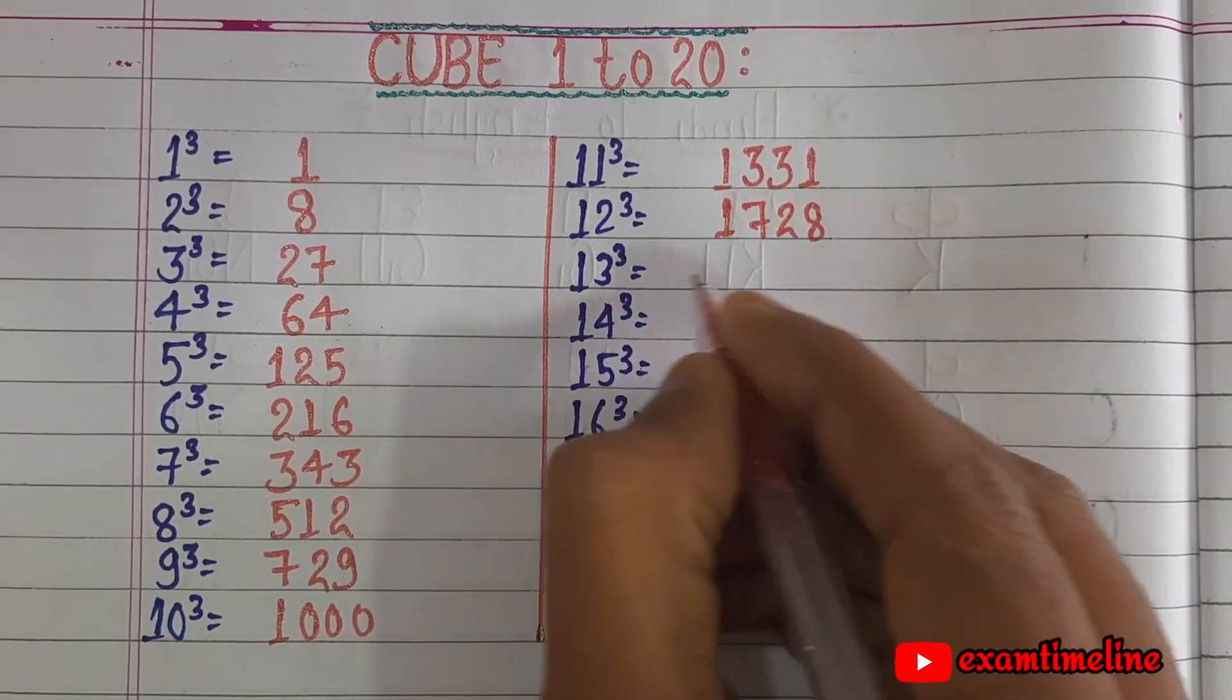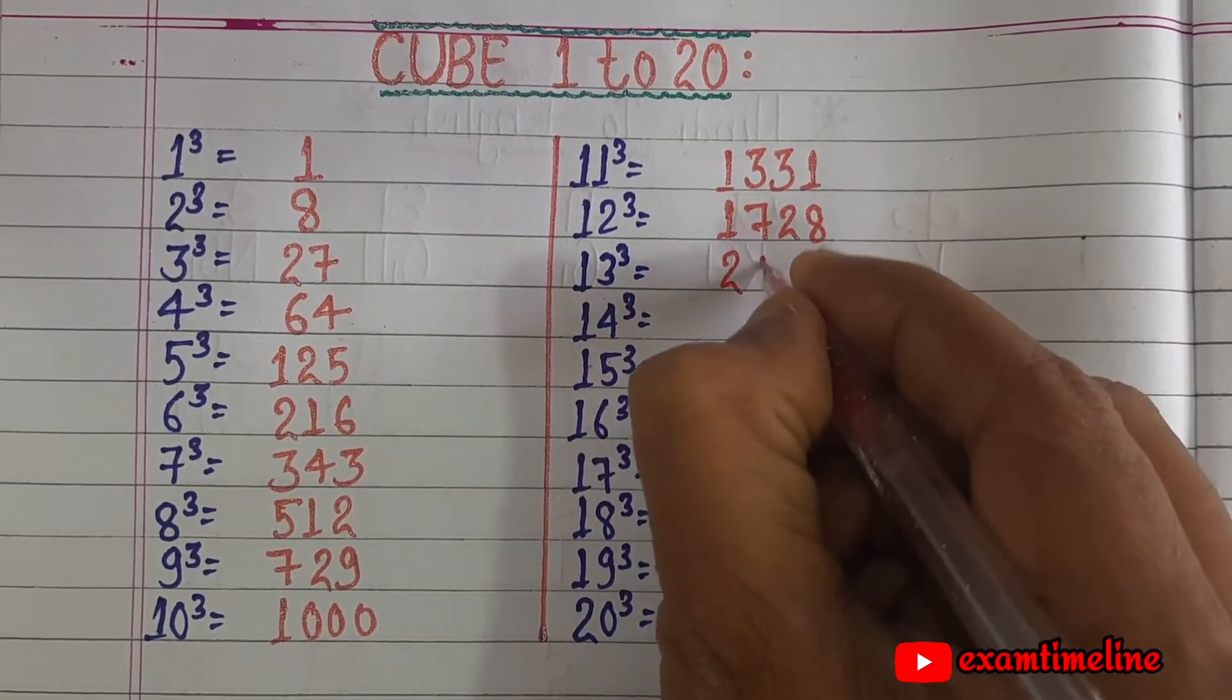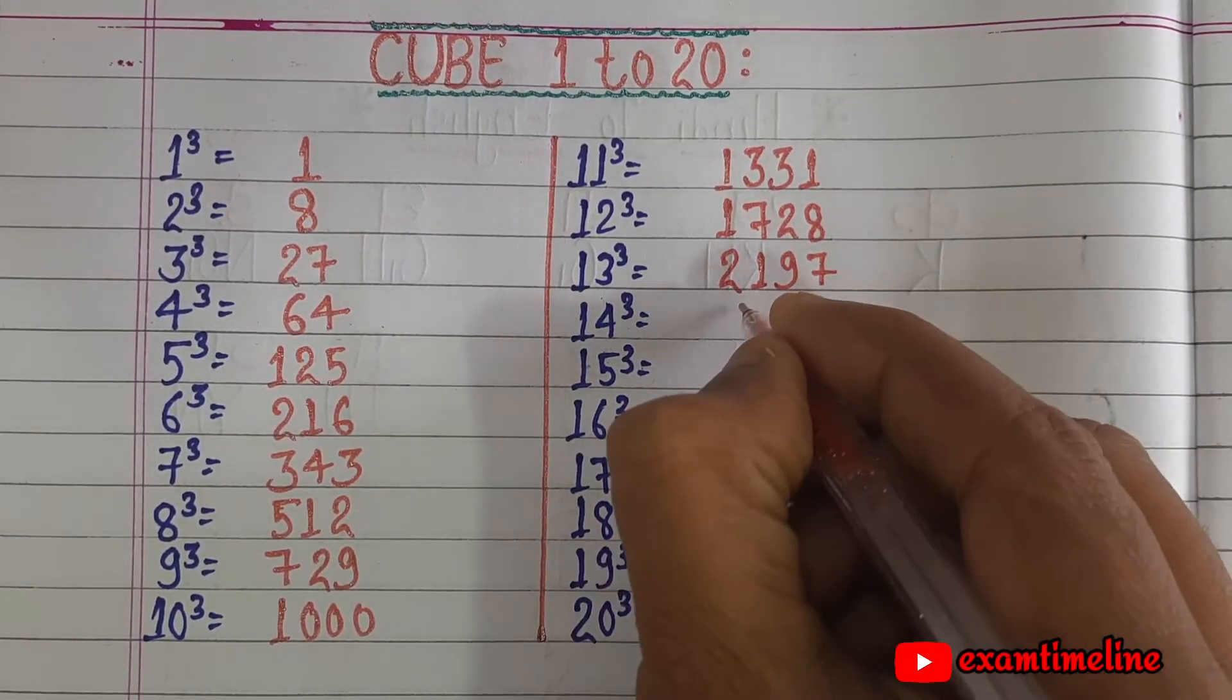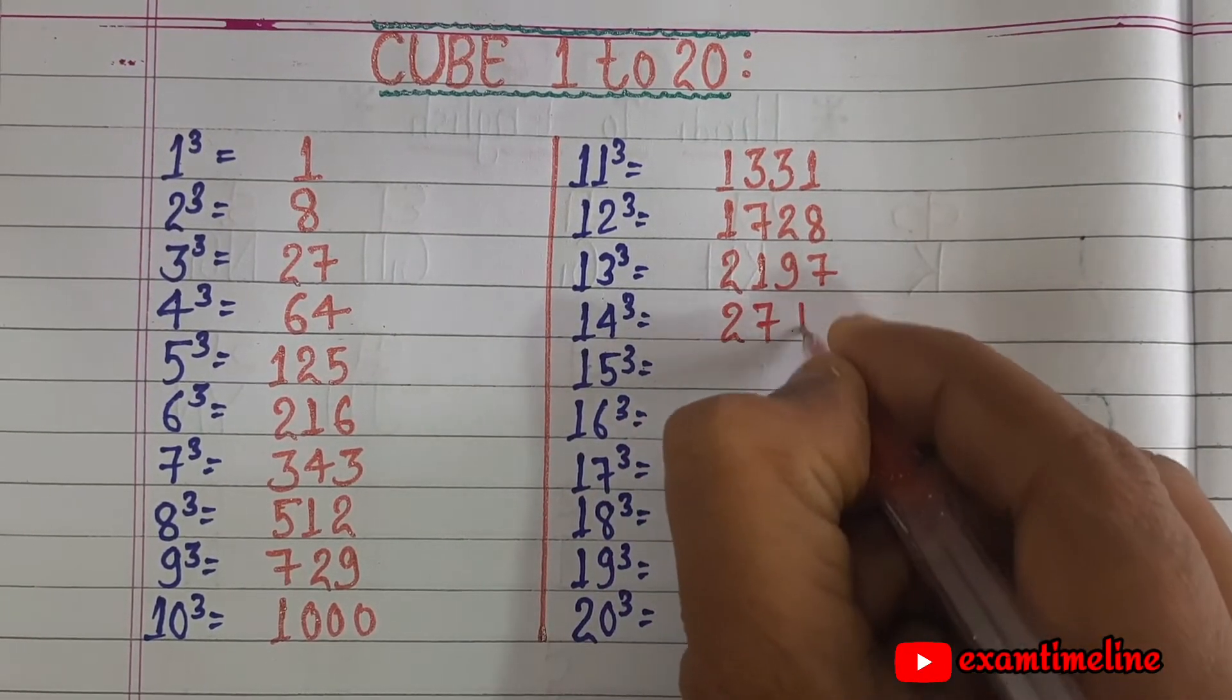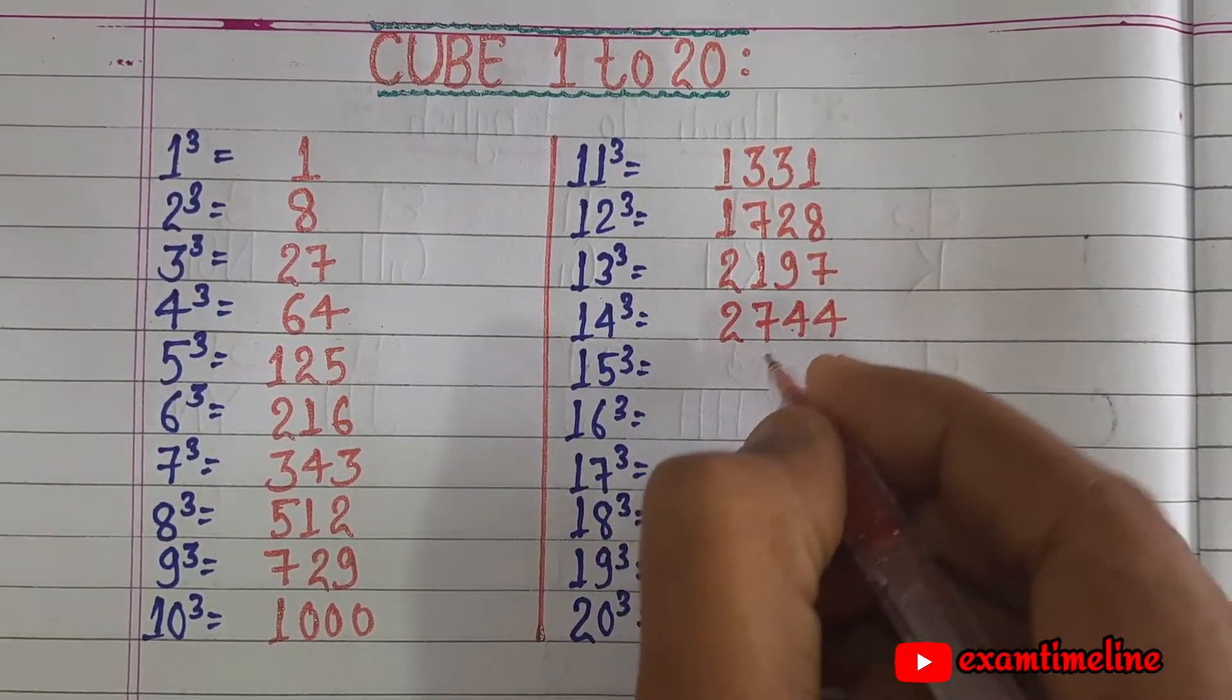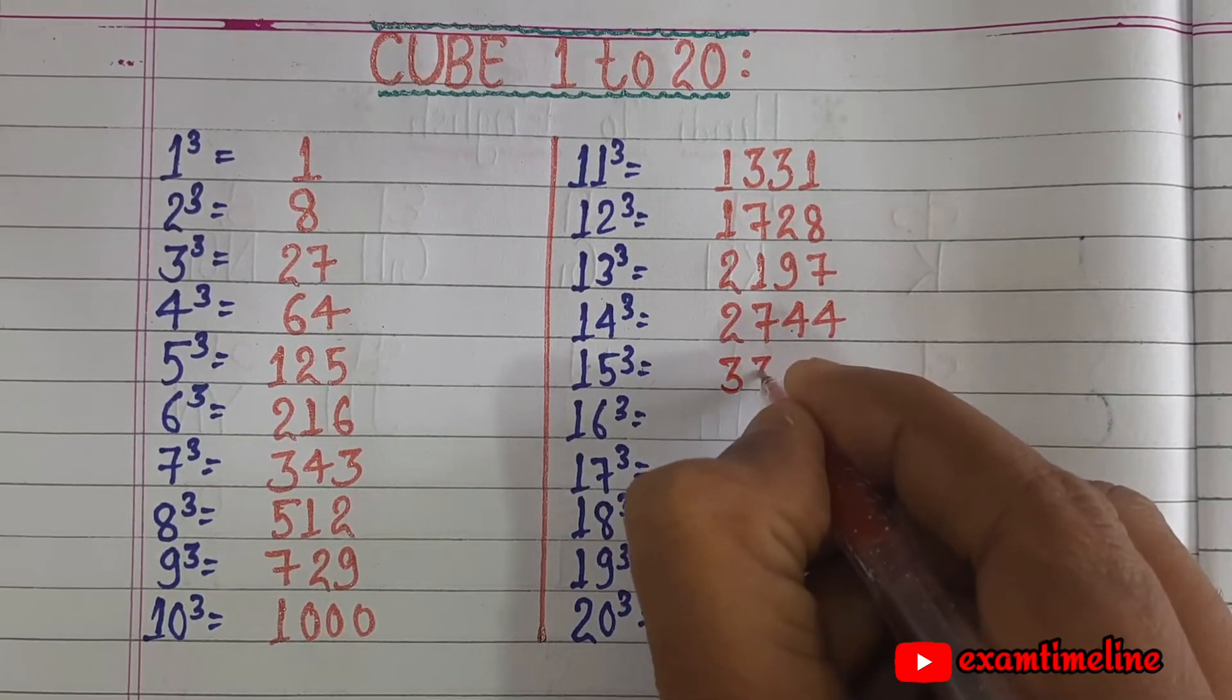13 cube equals 2197, 14 cube equals 2744, 15 cube equals 3375.